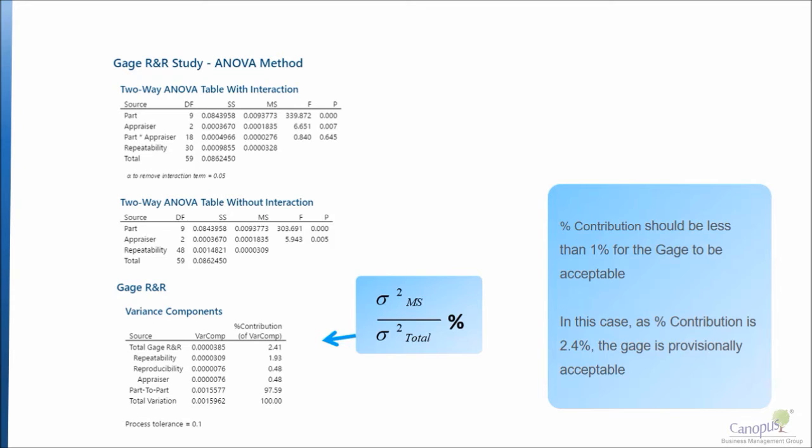In this case, we have the total gauge R&R contribution to be around 2.4%. This is a case where we will provisionally accept the gauge.